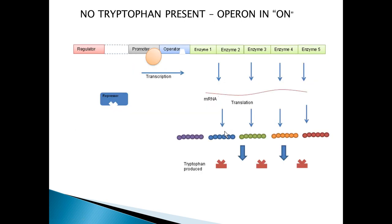As a repressible operon, tryptophan is typically in the on mode, synthesizing the enzymes needed for making the amino acid tryptophan. When tryptophan is absent from the environment, the repressor protein is not able to bind to the operator region, because it does not have a binding site or shape that will allow it to bind. The RNA polymerase is able to initiate transcription, translation can occur, the proteins can be made, and tryptophan can be produced.